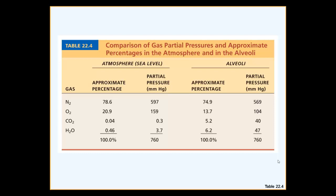This will be very important later when we talk about dead space. The key point: the changes we see in partial pressure for oxygen (from 160 down to 104) and carbon dioxide (from 0.3 up to 40) are mainly because the air you breathe in mixes with existing air, changing concentrations. For oxygen it's a moderate change, but for carbon dioxide it's a 100-fold increase — a very significant change that we'll need when discussing gas exchange.